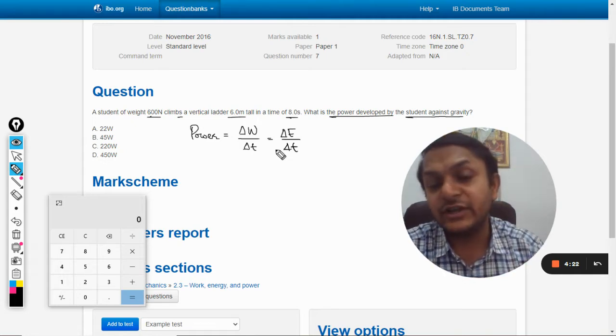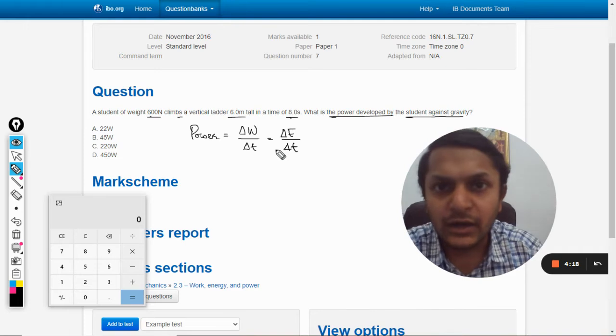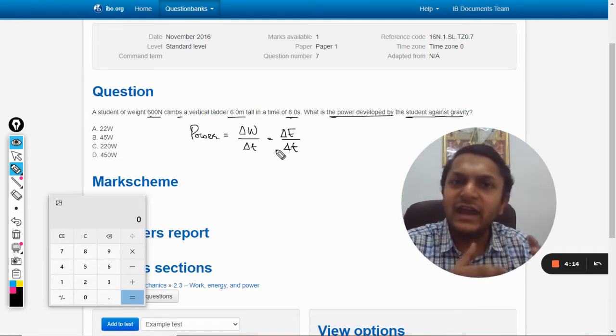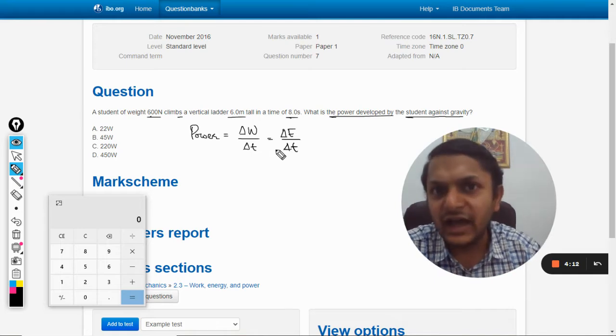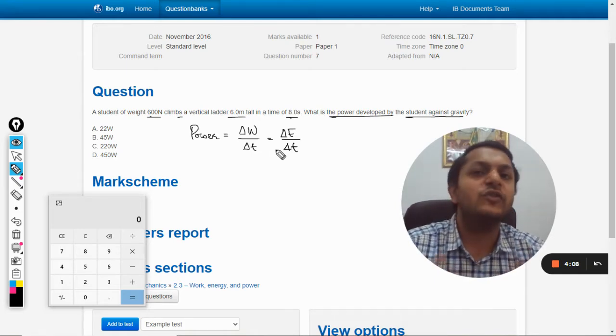And in this question, for example, the person is climbing a ladder. So when he's climbing a ladder, he's increasing his height. So he's increasing the potential energy. So we talk in terms of potential energy now.